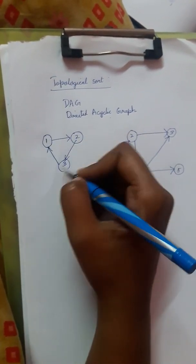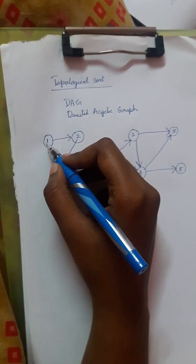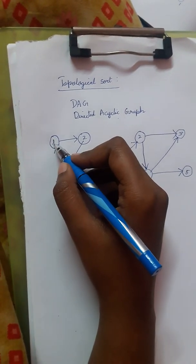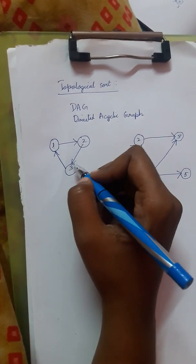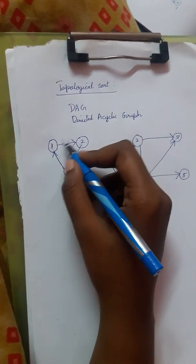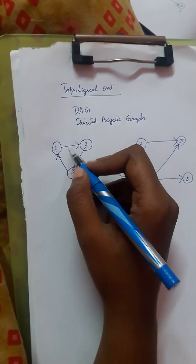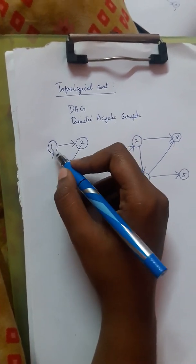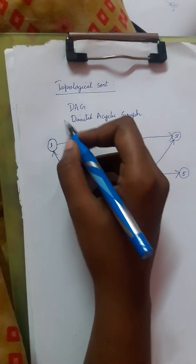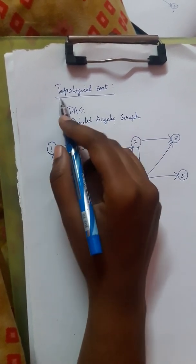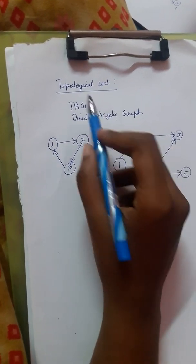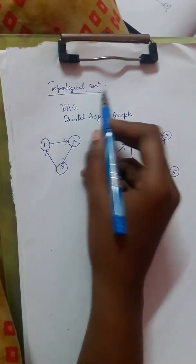Starting from 1: 1 to 2, 2 to 3, then 3 back to 1 — returning to the same starting point forms a cycle. In topological sort, the graph must be acyclic; it should not follow a cycle.